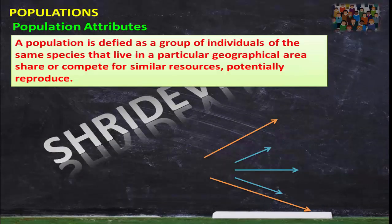So what is population? A population is defined as a group of individuals of the same species that live in a particular geographical area, share or compete for similar resources, and have the potentiality to undergo reproduction. It is not only applicable to humans — the definition applies to all species.